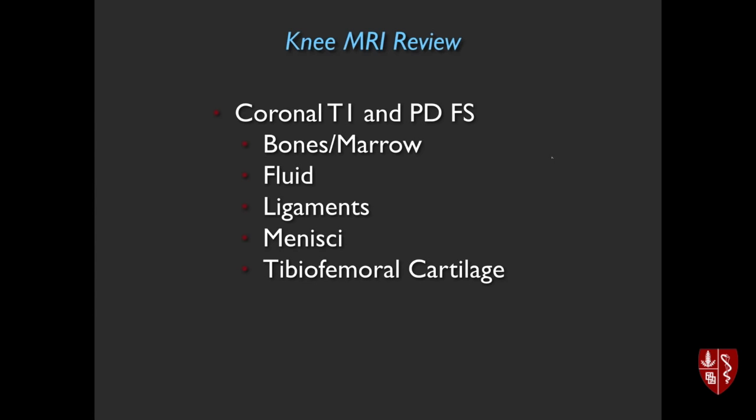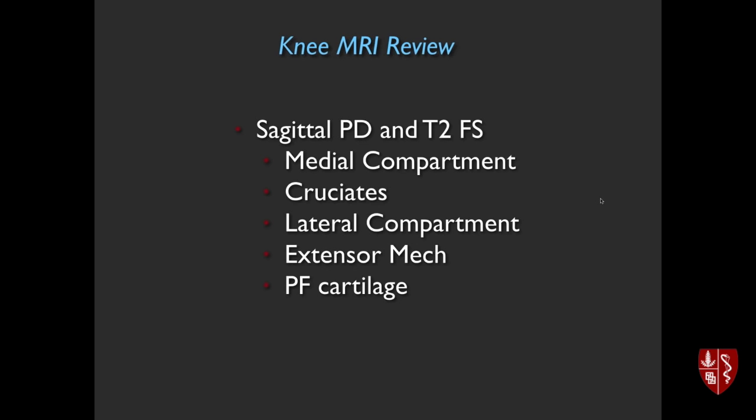As a quick review, in my scheme when I look at knee MRI scans I start with the coronal T1s and the fluid-sensitive sequences, going through bones and marrow, fluid, ligaments, menisci, and cartilage. The theory is to go through one plane very systematically, then go to the sagittal plane, then the axial plane — all of which adds up to a comprehensive review without having to flip back and forth between different pulse sequences.